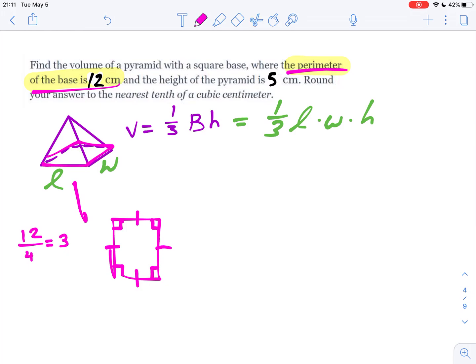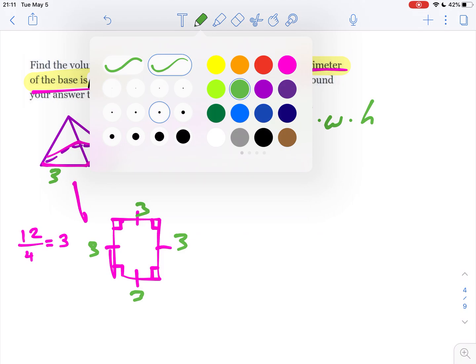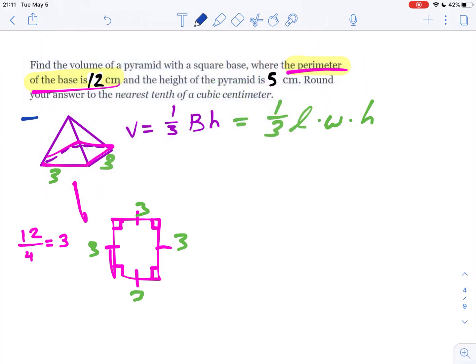So that's helpful because we can now, labeling it here, 3 by 3 by 3 by 3, actually use the formula. So we have a 3 by 3 base, perimeter of 12 still holds true, and the height, you'll notice, is 5. So that would be this height dimension right here.